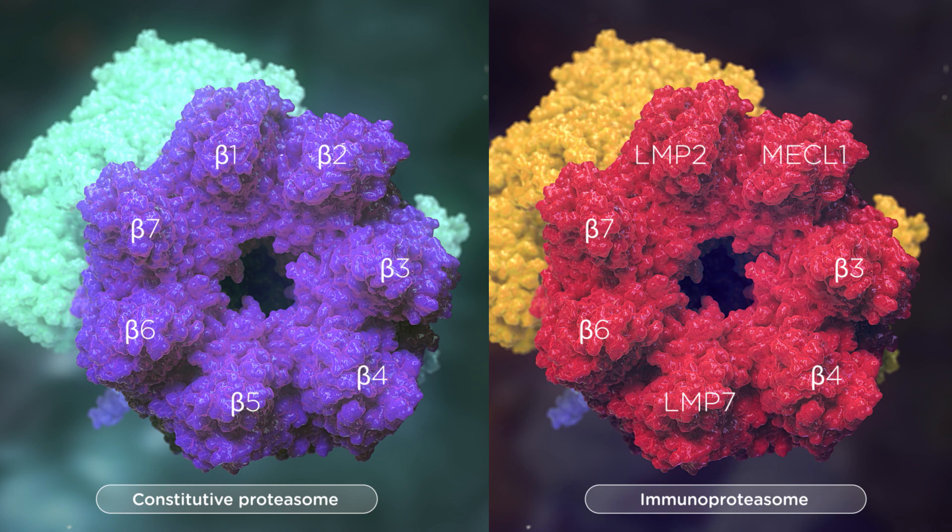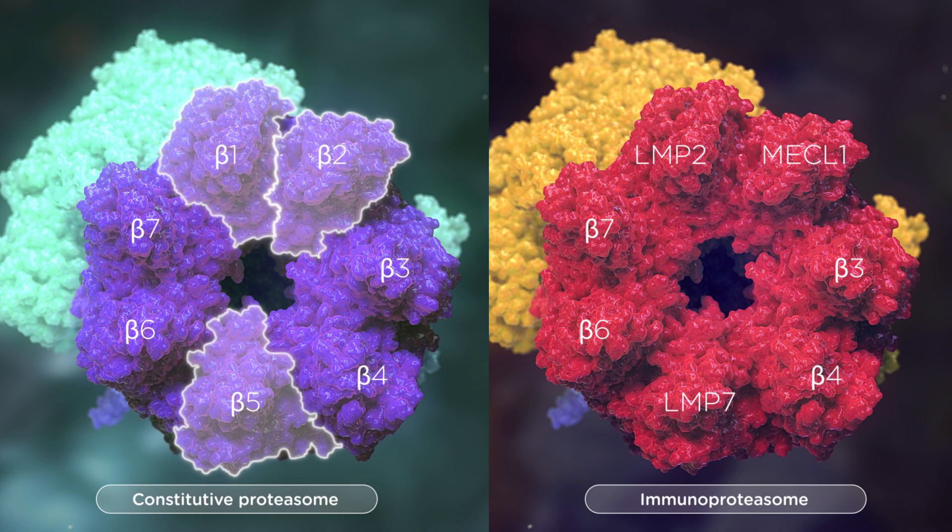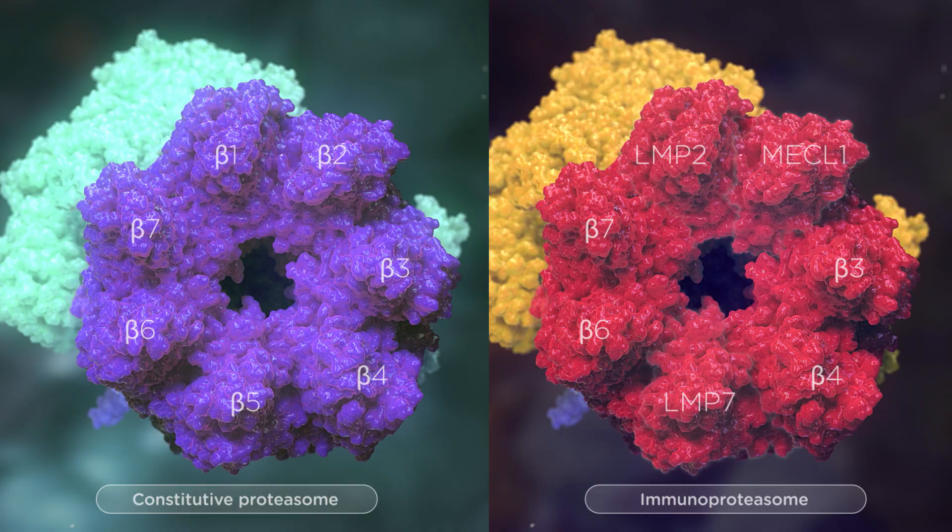The immunoproteasome contains LMP2, MECL1, and LMP7 as its active site subunits. These three subunits are the primary physical difference between the two forms.